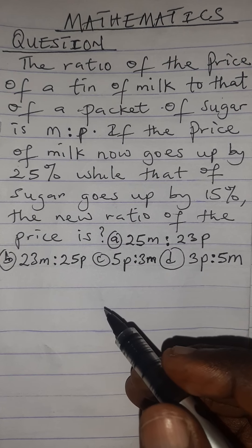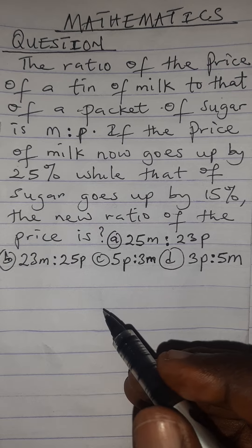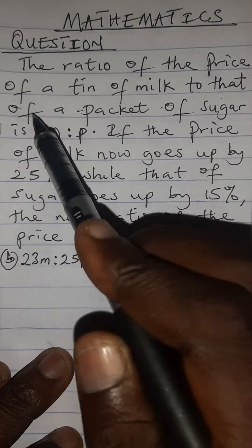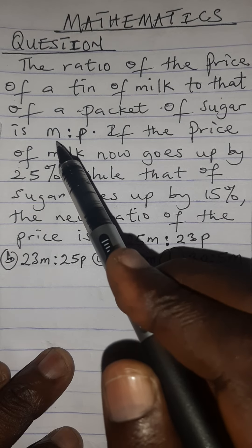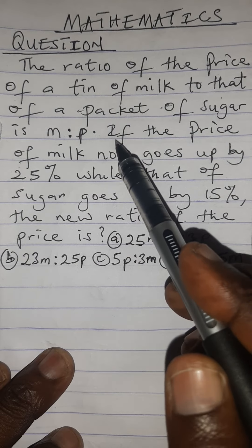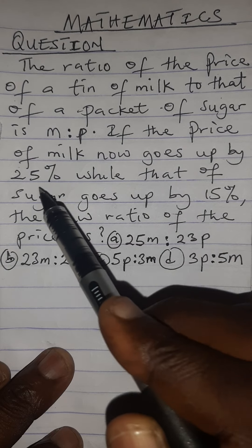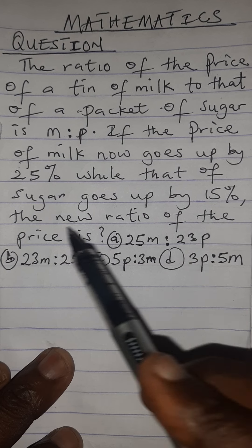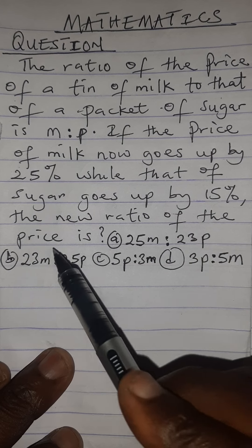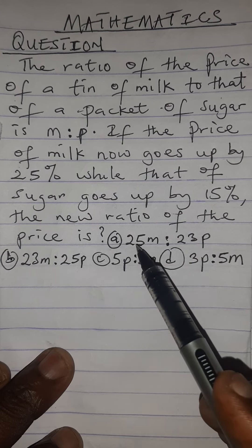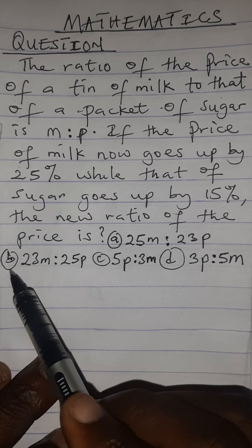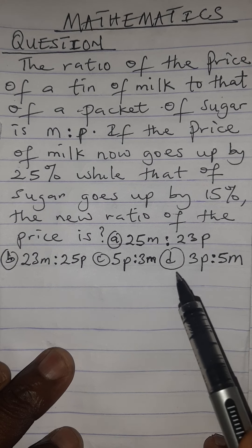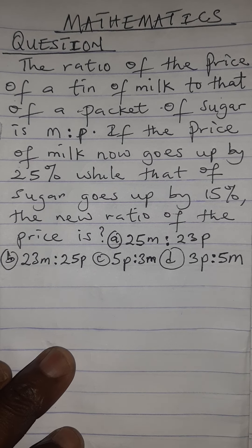Let's look at this question on ratio. The ratio of the price of a tin of milk to that of a packet of sugar is m to p. If the price of milk goes up by 25% while that of sugar goes up by 15%, the new ratio of the price is: A) 25m to 23p, B) 23m to 25p, C) 5p to 3m, or D) 3p to 5m.